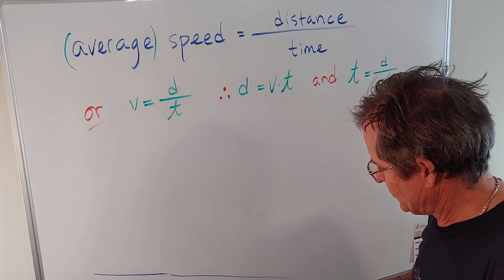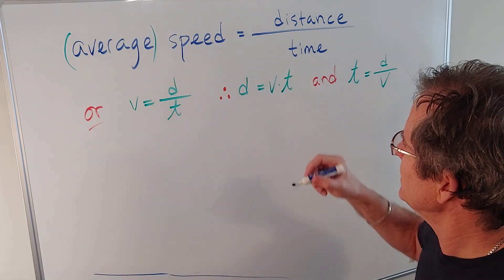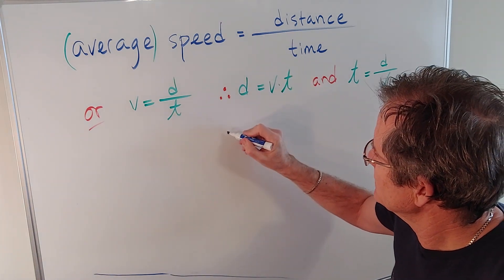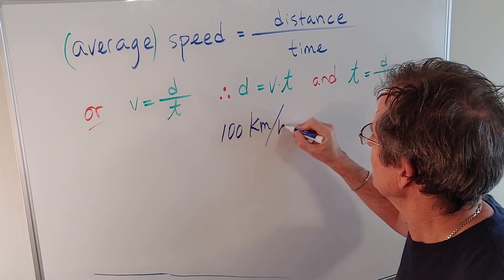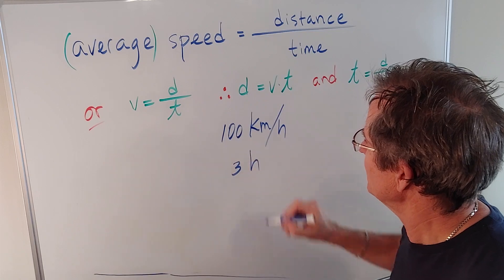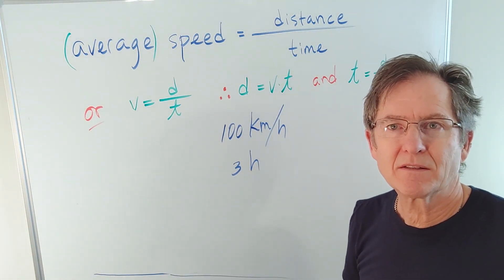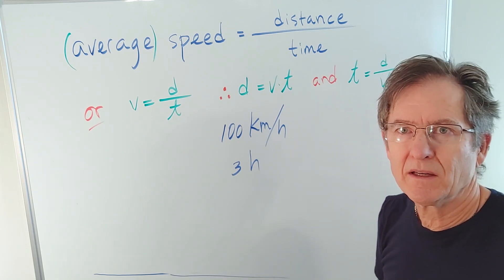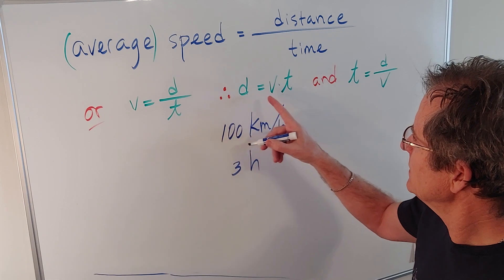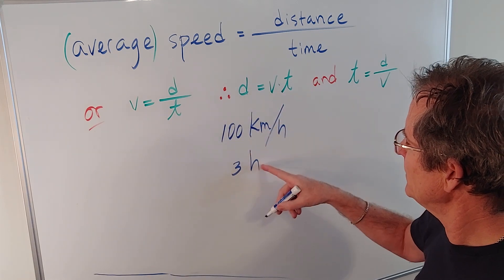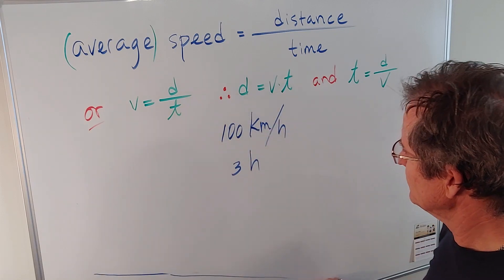If ever you have trouble remembering any one of these formulas, or the definition even, just think of a concrete example like traveling down the highway at 100 km per hour for, let's say, 3 hours. How far would you go? Common sense. 300 km, right? How'd you get it? You multiplied those two numbers. So distance is speed, this one, times time, this one. And then you can rearrange the formulas as needed.